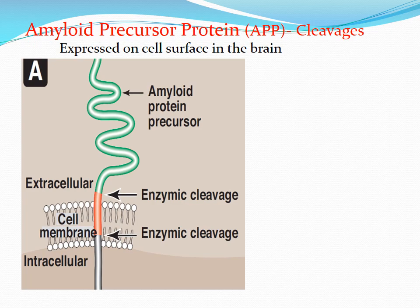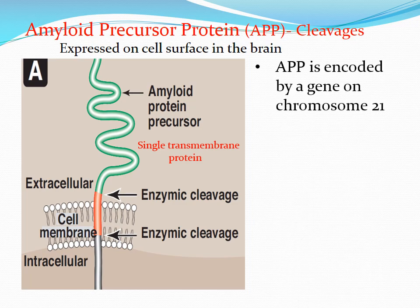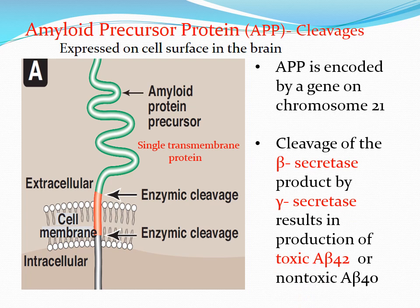This is a diagrammatic representation of amyloid precursor protein and its cleavage. It is expressed on the cell surface in the brain and is a single transmembrane protein. Amyloid precursor protein is encoded by a gene on chromosome 21. Cleavage of the beta-secretase product by gamma-secretase results in production of toxic amyloid beta-42 or non-toxic amyloid beta-40, as discussed in the previous slide.